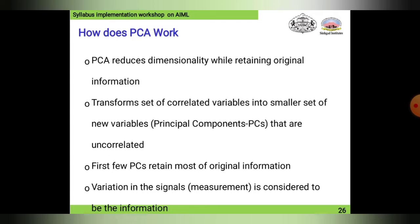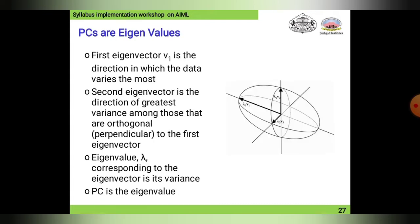How does PCA work? PCs are eigenvalues. The first eigenvector V1 is the direction in which the data varies the most. Here we can see V1 lambda 1.